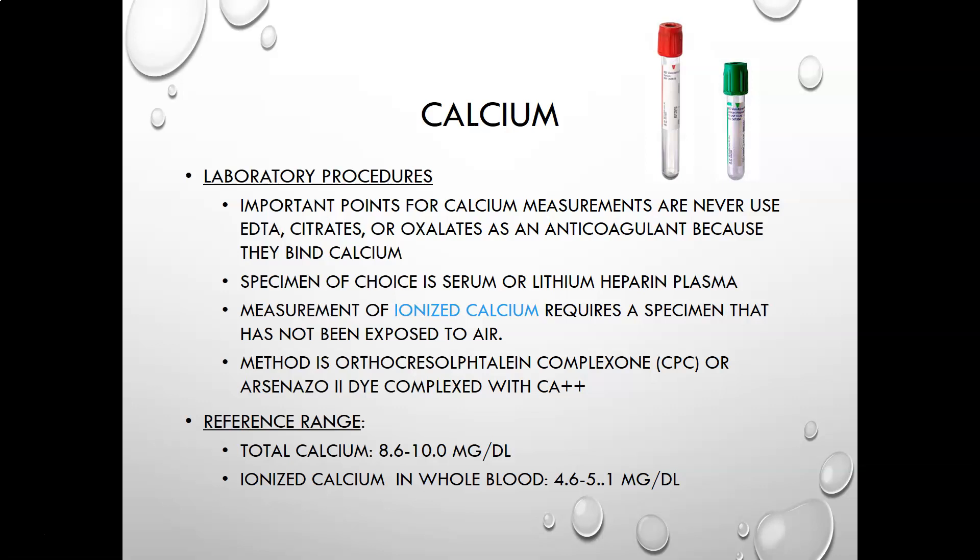For lab procedures for calcium: never use EDTA (purple tops), citrates (blue tops), or oxalates as anticoagulants, because they all bind calcium as part of their anticoagulant process, leaving no calcium to measure. The specimen of choice is serum or lithium heparin plasma. Measurement of ionized calcium requires a specimen not exposed to air. The method of measurement is o-cresolphthalein complexone (CPC) or the arsenazo III dye complex with calcium. The reference range for total calcium is 8.6 to 10.0 mg/dL, and for ionized calcium in whole blood, 4.6 to 5.1 mg/dL.